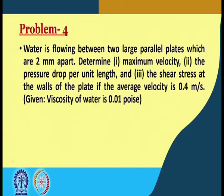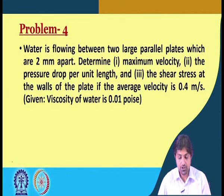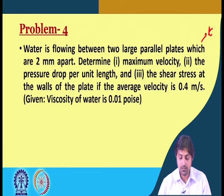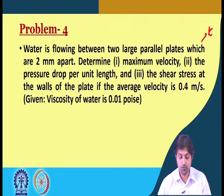Welcome back to this lecture on laminar and turbulent flow. We are going to start from where we left off and solve another problem on laminar flow. The question is: water is flowing between two large parallel plates which are 2 millimeters apart. Determine the maximum velocity, the pressure drop per unit length dp/dx, and the shear stress at the wall, given that the average velocity is 0.4 meters per second and viscosity of water is 0.01 poise.